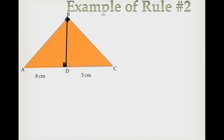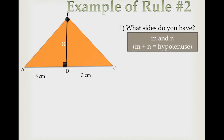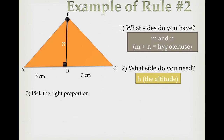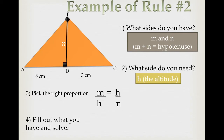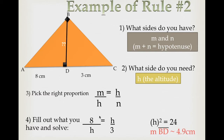Here is your right triangle — I've given you M and N, and I want you to find the altitude. You need the altitude; you have the hypotenuse segments. We pick the proportion that deals with M, N, and the altitude: M over H equals H over N. Plug in what you know — M is 8, N is 3. You get H squared equals 24. Square root both sides and you get BD equals approximately 4.9 centimeters. That's rule number two.